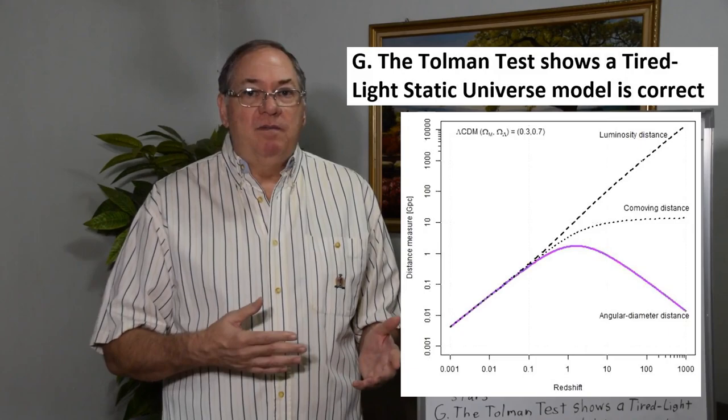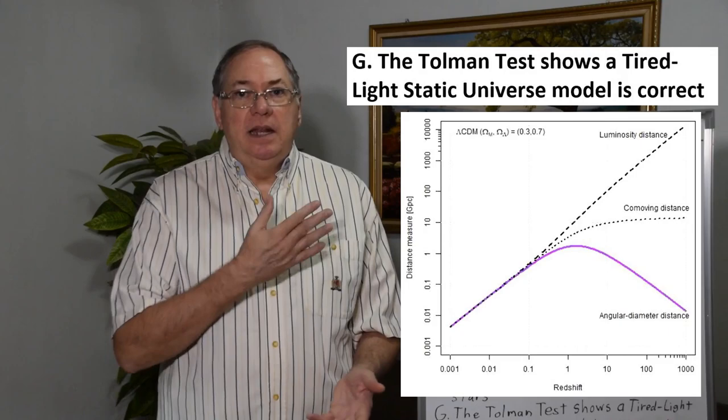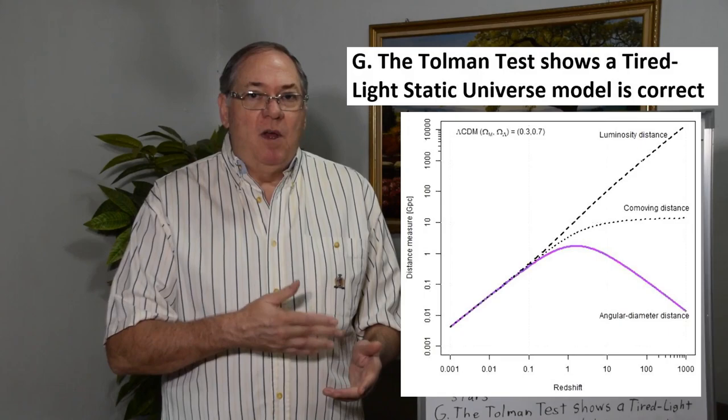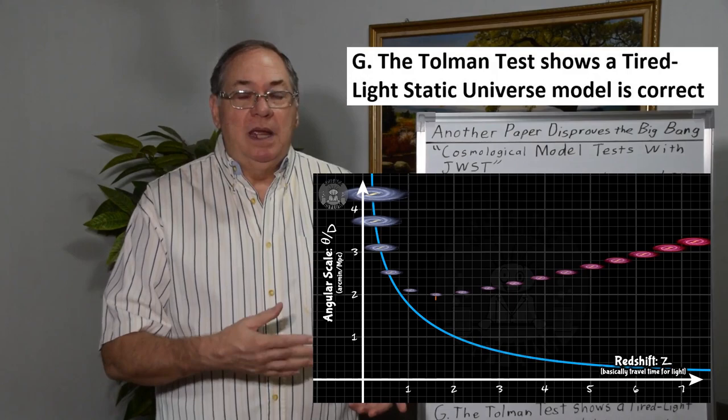And then we have the co-moving frame distance, which is where the galaxies are now, which we can't actually observe because we're seeing them much earlier in time. And then the linear distance. The tired light models fall between this co-moving frame distance and the linear distance. So it makes the galaxies look much smaller than they would be if the Big Bang model were correct.